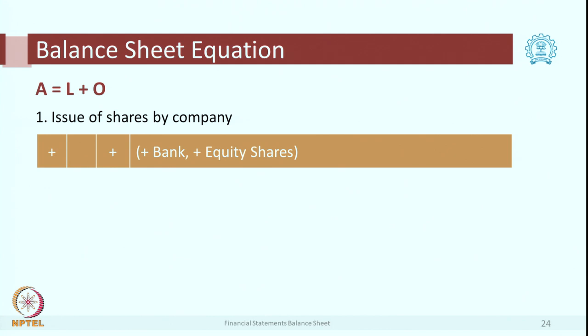Let us say a newly formed company issues shares. What will be the impact on A, L, and O? Prospective shareholders pay money to the company, which receives cash and gives shares. So assets go up, no change in liability, and owner's fund goes up — A plus, O plus. In detail: bank balance of the company goes up, and equity share balance also goes up — add to bank, add to equity shares.